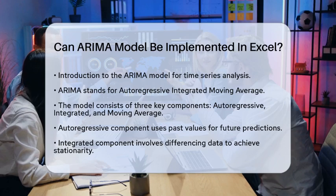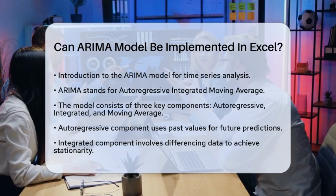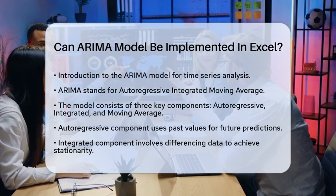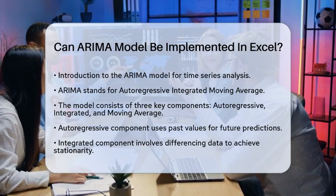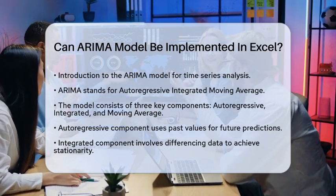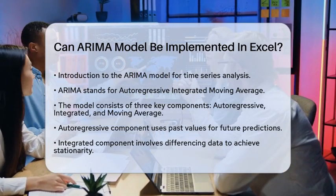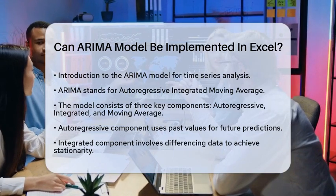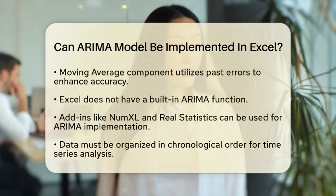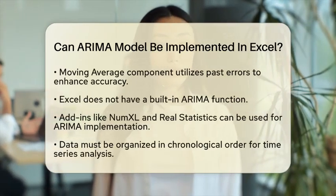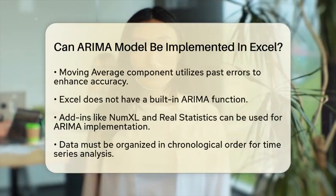The autoregressive part uses past values to predict future ones. The integrated component involves differencing the data to make it stationary, which means removing trends and seasonality. Finally, the moving average part uses past errors to improve the accuracy of predictions.